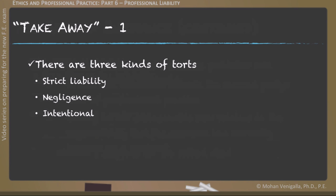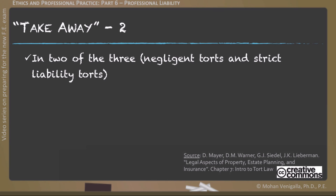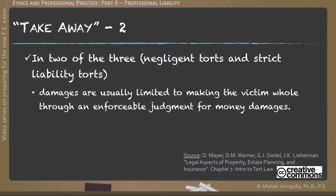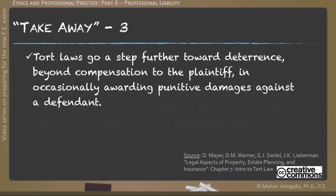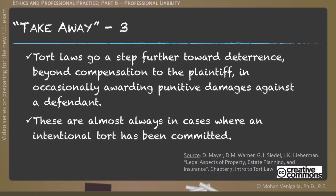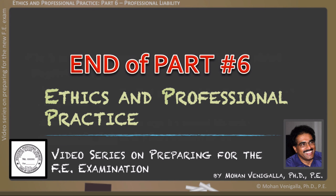Let's summarize our coverage on professional liability. There are three kinds of torts: strict liability, negligence, and intentional tort. In negligent tort and strict liability tort, damages are usually limited to compensating the victim through enforceable monetary judgment. Damages awarded by a court accomplish only approximate justice for injuries or property damage caused by a tortfeasor. Tort laws go a step further toward deterrence by occasionally awarding punitive damages against the defendant — almost always in cases where an intentional tort has been committed. That marks the end of part 6 of the video series on Ethics and Professional Practice.